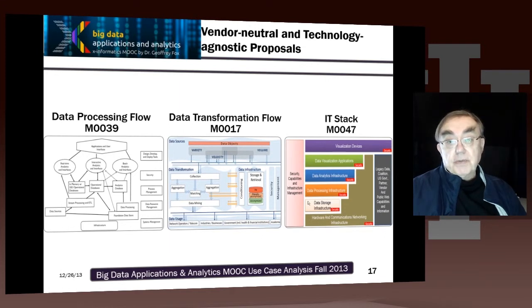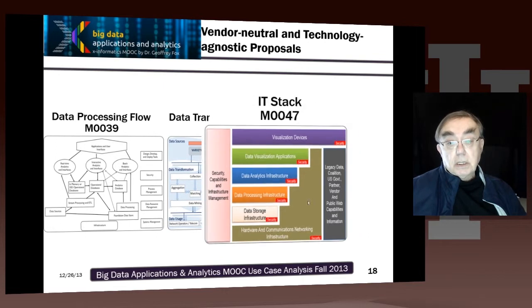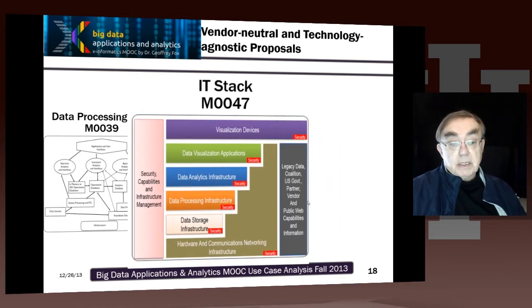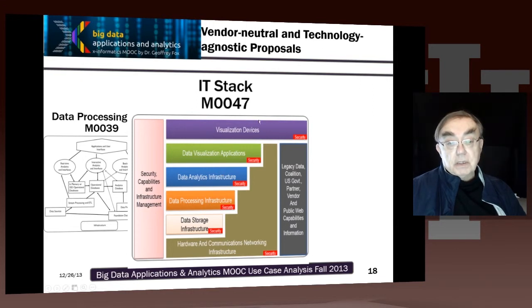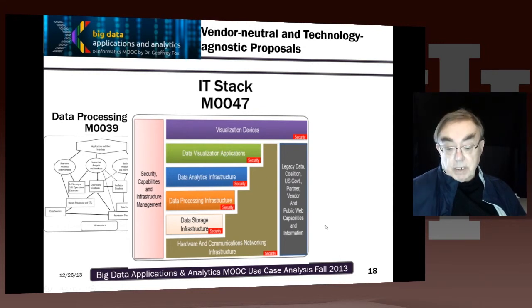These are the generic architectures. If you look in more detail, this is for the IT stack — document M0047. You have security as a cross-cutting theme, then visualization, analytics, processing, and storage. This is sort of hardware, storage, processing, analytics, visualization, software, and then the actual devices. The people are sitting here looking at the visualization. So that's one generic architecture.